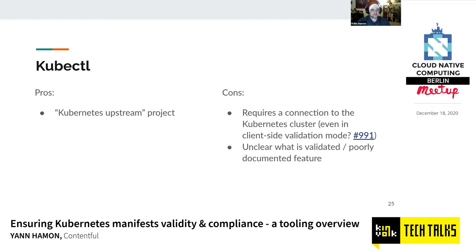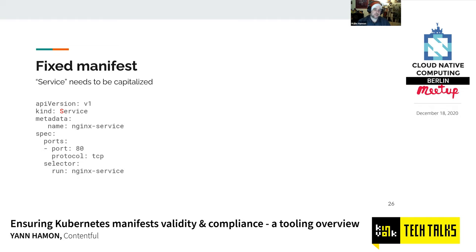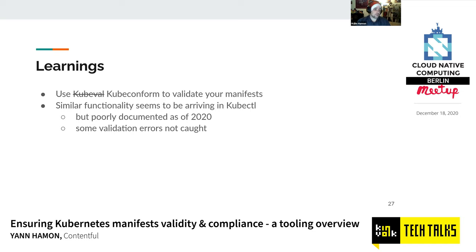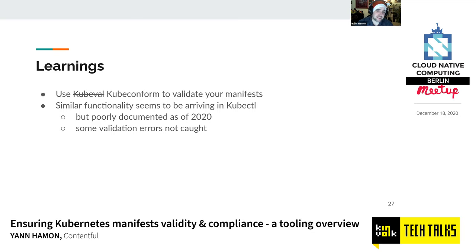The fix: use a capital 'S' for Service. The learning: use kubeval or KubeConform to validate your manifests. There are many mistakes regularly caught this way — misnamed properties, wrong types (string vs integer). It's much easier to catch this in CI than during apply, where Kubernetes might accept the manifest but silently ignore an unknown property, not doing what you expected. kubectl is starting to do the same validation as of 2020, but it's unclear what exactly it validates — for now, I'd advise kubeval or KubeConform.